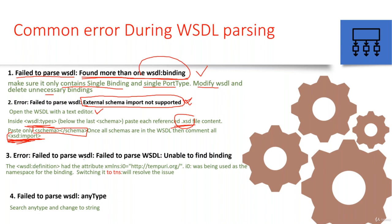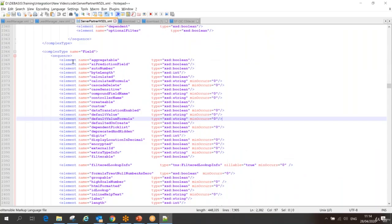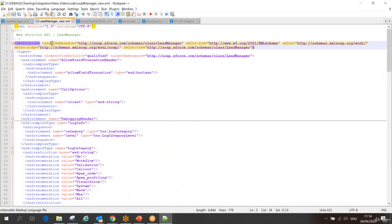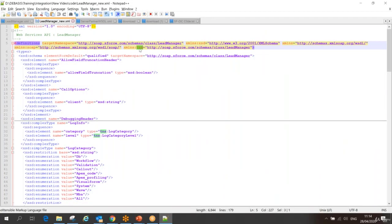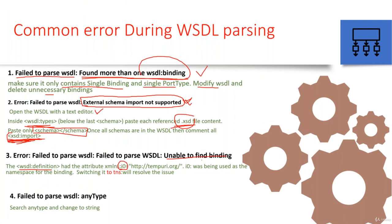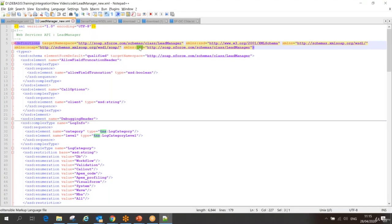Similarly, sometimes you may get the error 'Failed to parse WSDL — unable to find binding.' Sometimes your binding may not be found and it will throw this error. When you get this, go to your definitions section. Here I define my target namespace and all these things. If the target namespace is not defined with 'xmlns:tns' then you will get this error. Your WSDL definitions may have an attribute like 'xmlns:io' — instead of that, simply change it to 'tns.' If you get this error, go to your definition and switch 'xmlns:io' to 'tns' to resolve it. You can see here 'tns' is defined — that should be there.